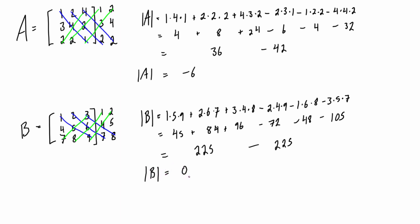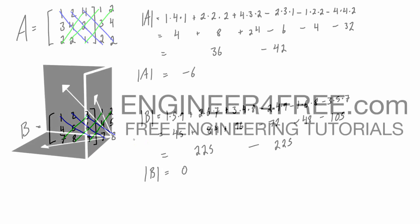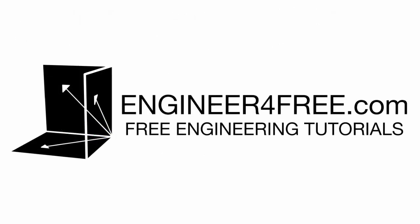We find that the determinant of matrix B here is equal to zero, and that's exactly what we got in the last video when we did this by the full cofactor expansion method. But hopefully you guys like this shortcut, and I personally would always opt for this when possible because it's just a lot faster.